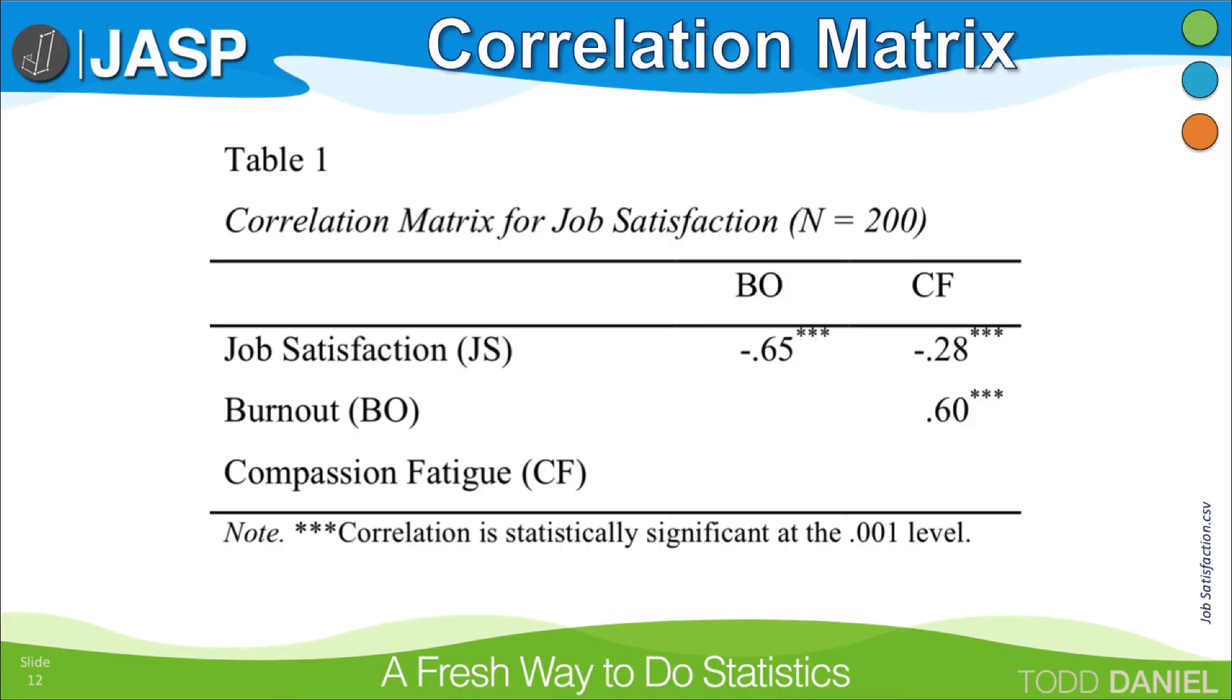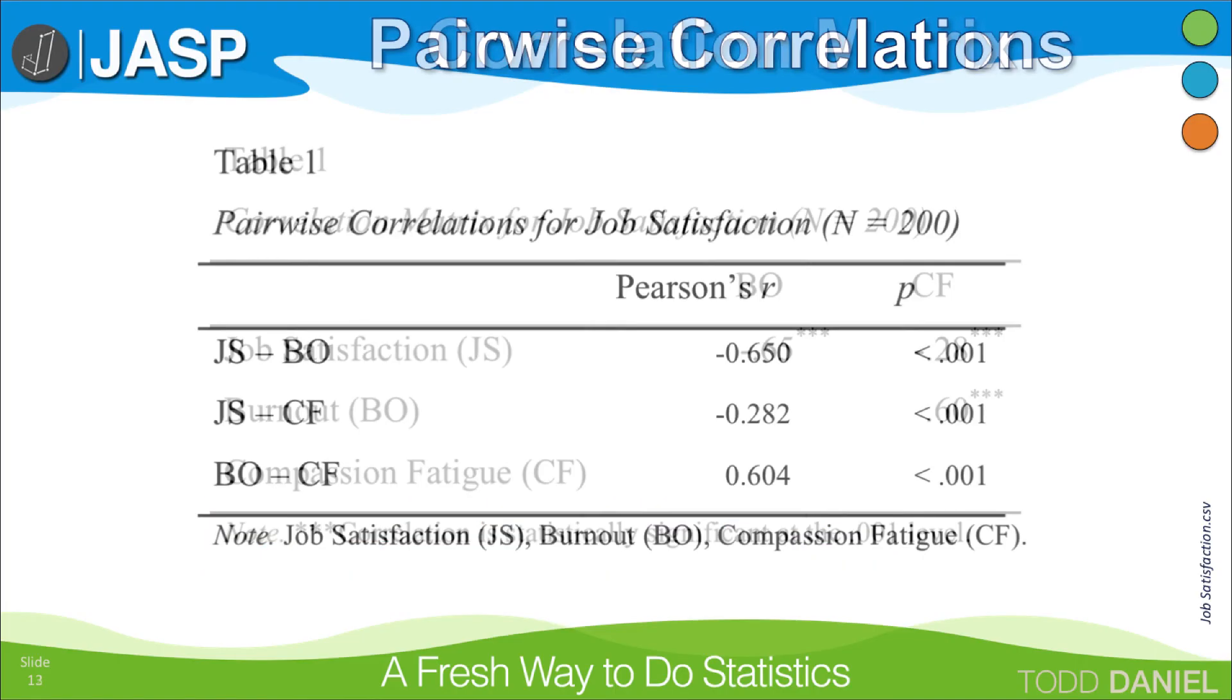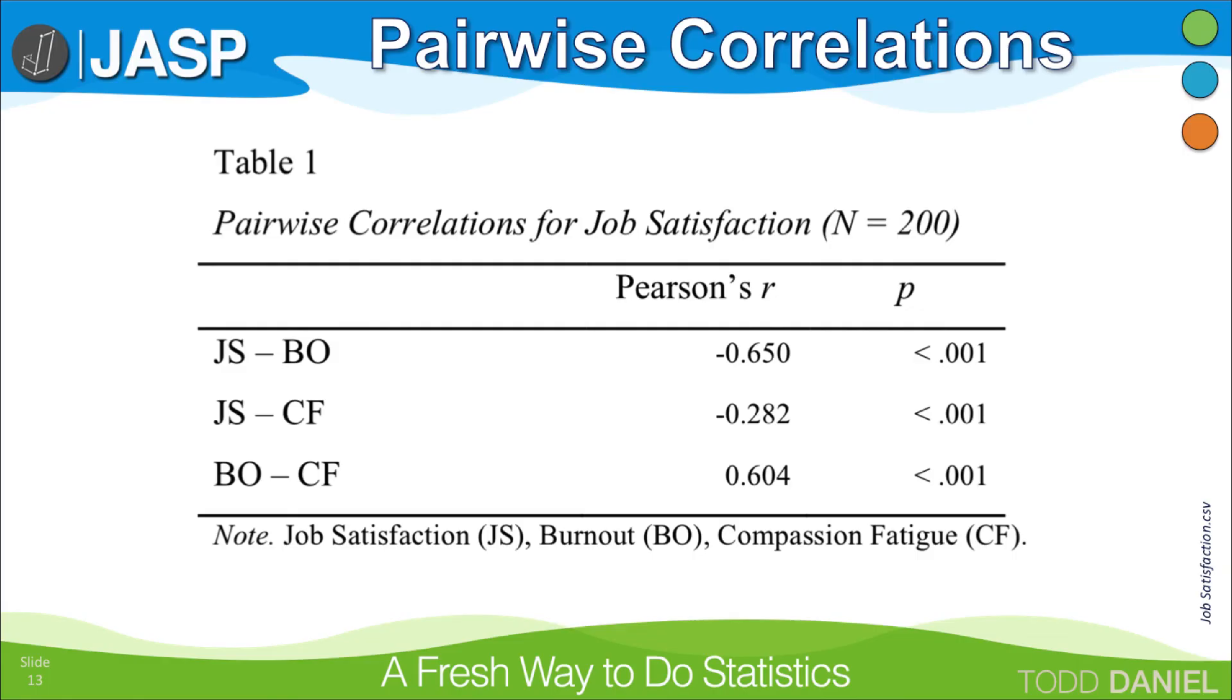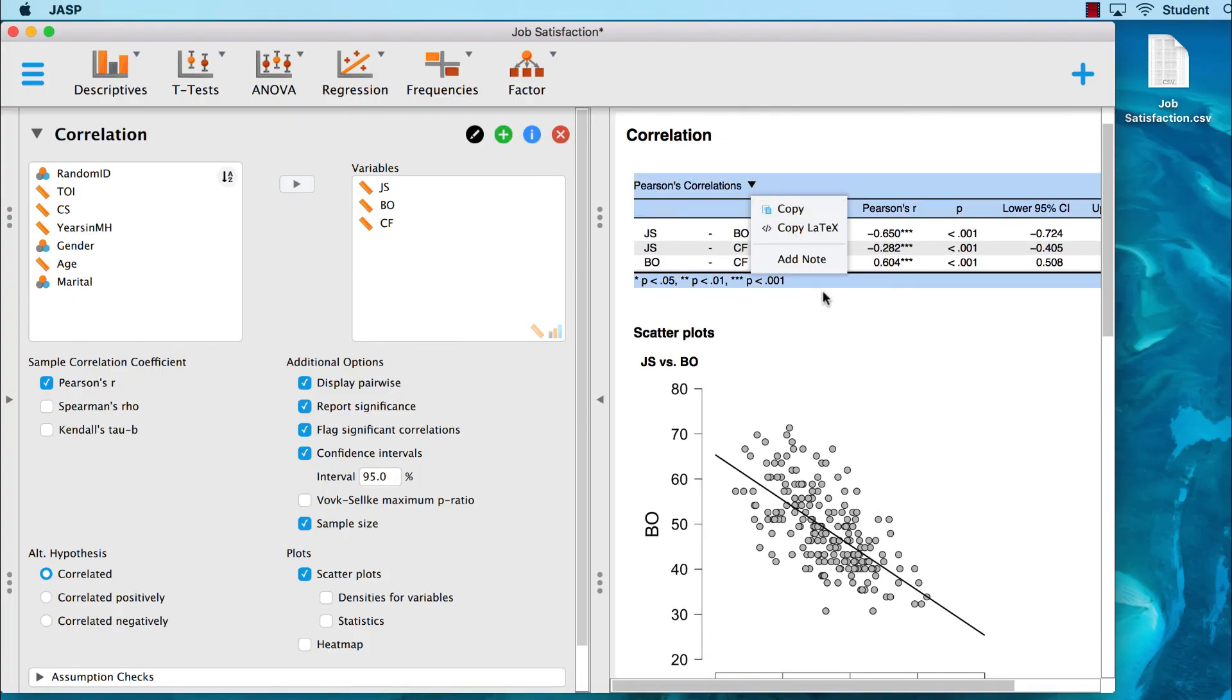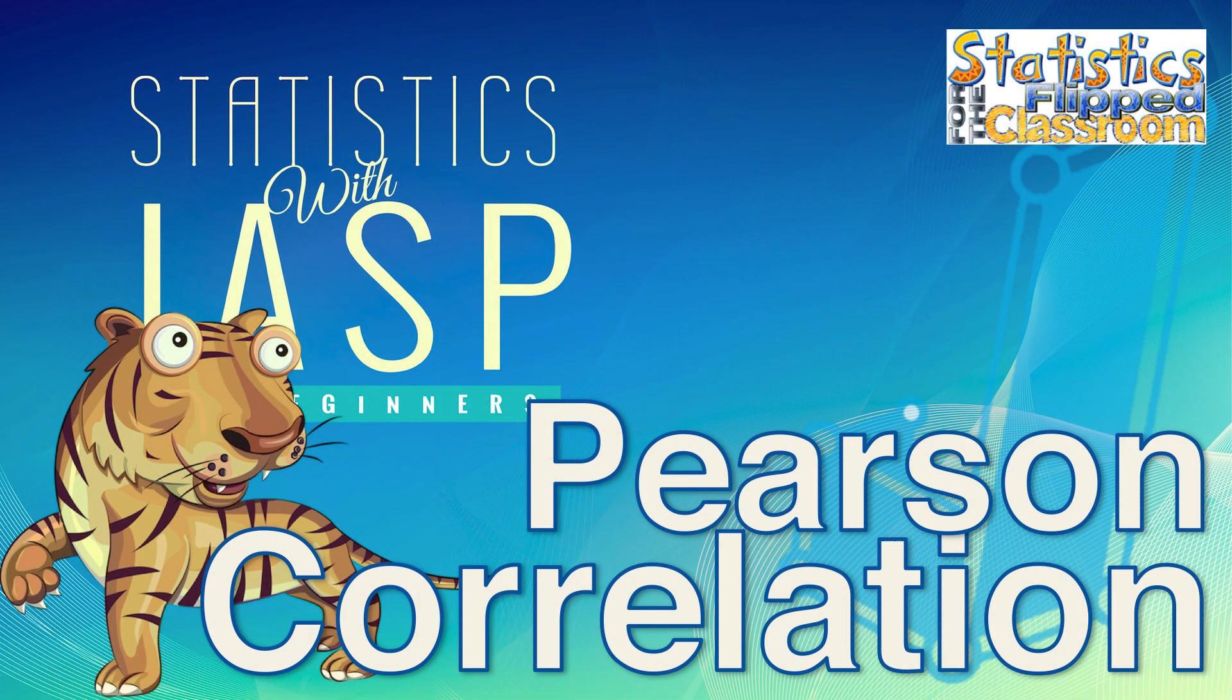Finally, I used the JASP convention of three asterisks for correlations significant at the .001 level, and I included the meaning of the asterisks in a note below the table. My second option is to report the pairwise correlations in a single APA-style table like this. One of the really handy features in JASP is the ability to create publication-ready tables and figures. I would copy the scatter plot from the results window and paste it into my report. And that is how we compute and report a Pearson correlation in JASP.